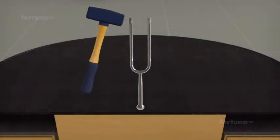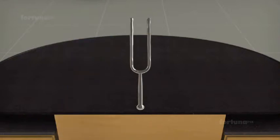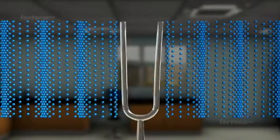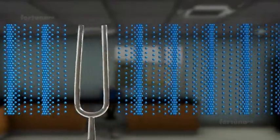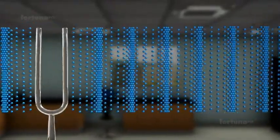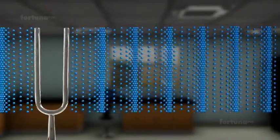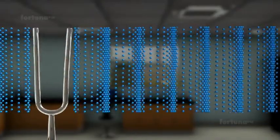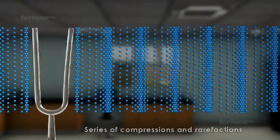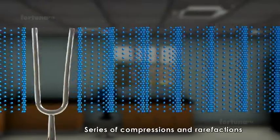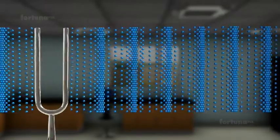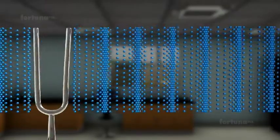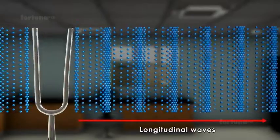As the tines of a tuning fork vibrate back and forth, they will disturb the air molecules surrounding them. These disturbances are passed on to adjacent air molecules. The continuous vibration of the tines create a series of compressions and rarefactions. The sound waves travel in the same direction as that of air particles. For this reason, they are known as longitudinal waves.